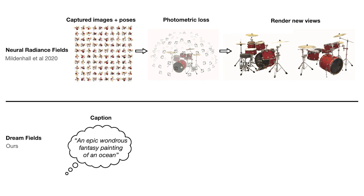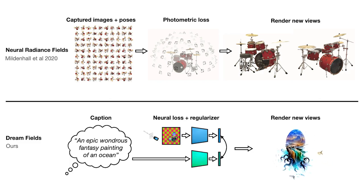In contrast, our dream fields do not require any photographs, which are difficult to capture and are not available when a user wants to design a novel object. Instead, the user just provides a textual description of the desired object. A dream field learns geometry and color solely with guidance from a deep neural network conditioned on the caption, and simple regularizers. Novel perspectives are geometrically consistent and reflect the desired caption well.